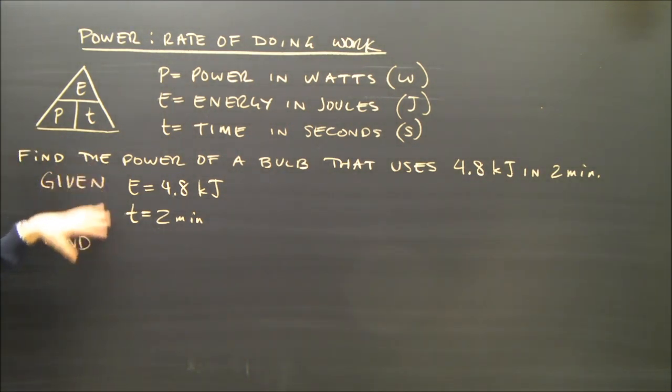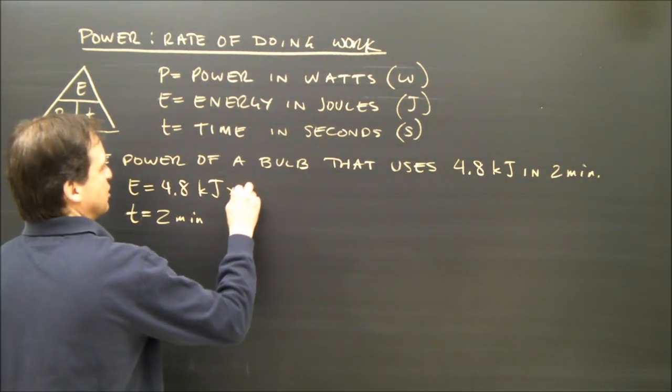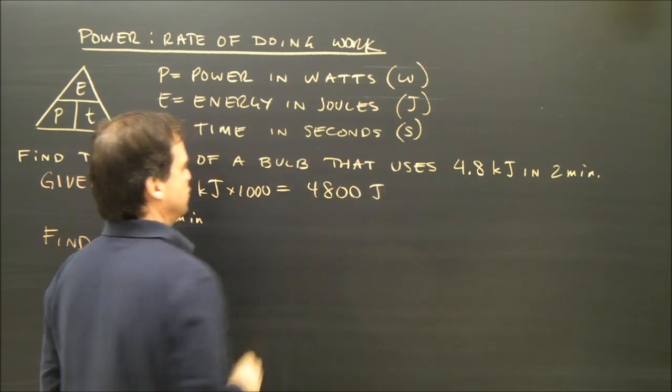And you always should check your units. This is not the correct units. I need it in joules. So kilojoules is like turning kilometers to meters or kilograms to grams. Kilojoules to joules I have to multiply by a thousand. So times 1,000 equals 4,800 joules.